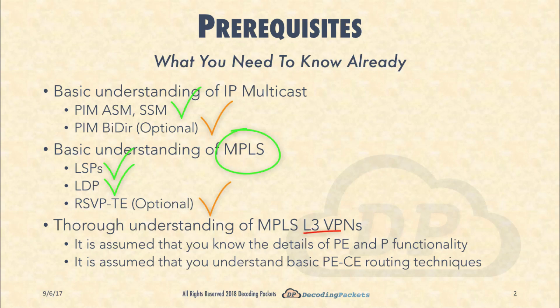Finally, you should have a thorough understanding of how MPLS Layer 3 VPNs work, because all of the multicast VPNs will be built on top of the traditional MPLS Layer 3 VPN. If you do not understand that, frankly, you will not be able to follow much of what is discussed in this lecture series. It is assumed that you know the details of PE and P functionality — how provider edges and provider routers work and what their functions are.